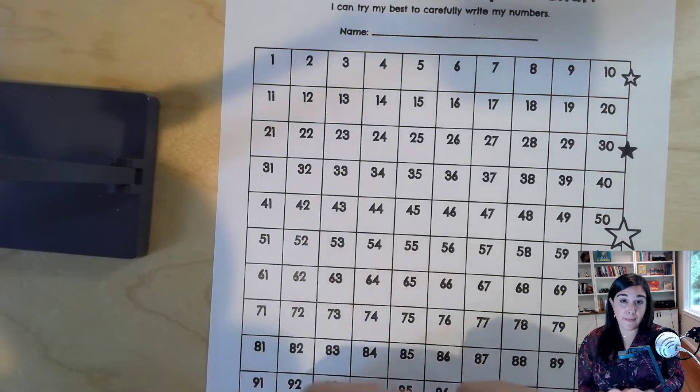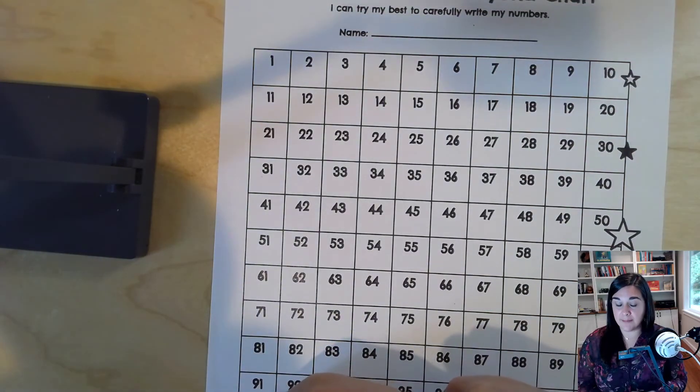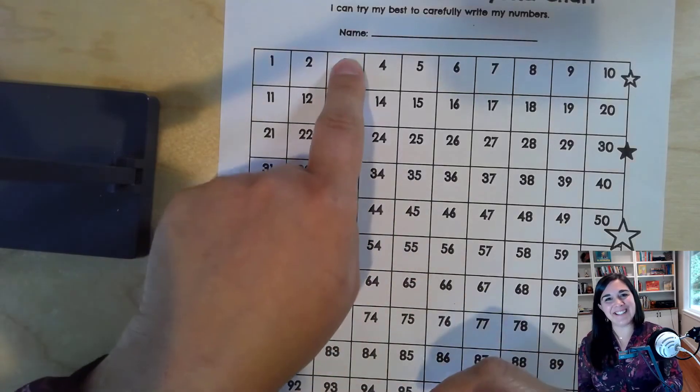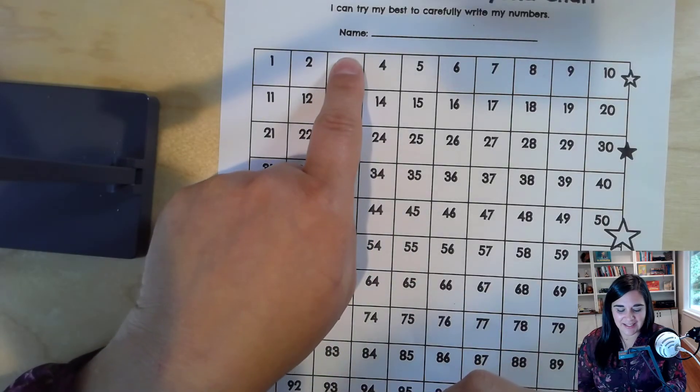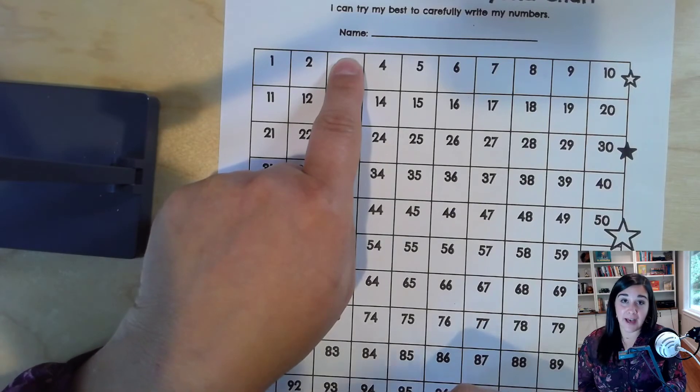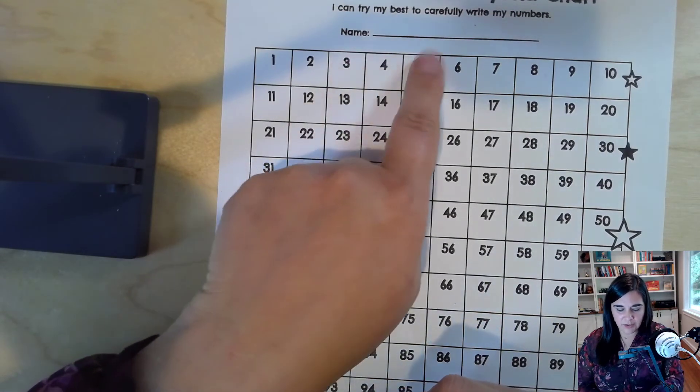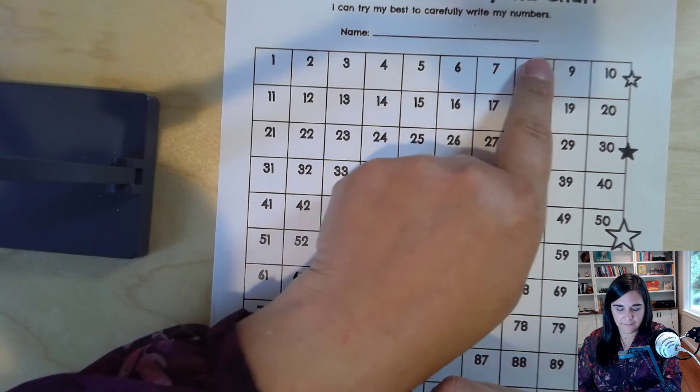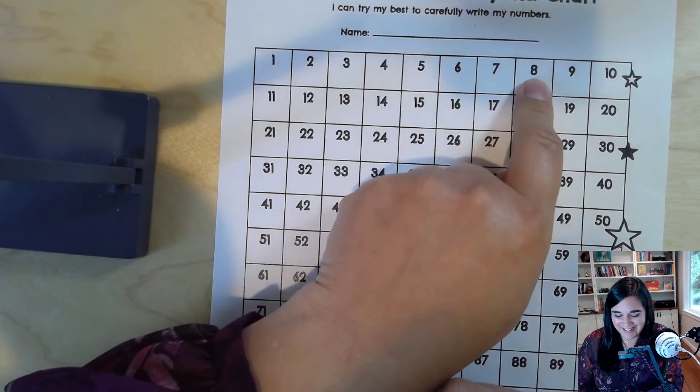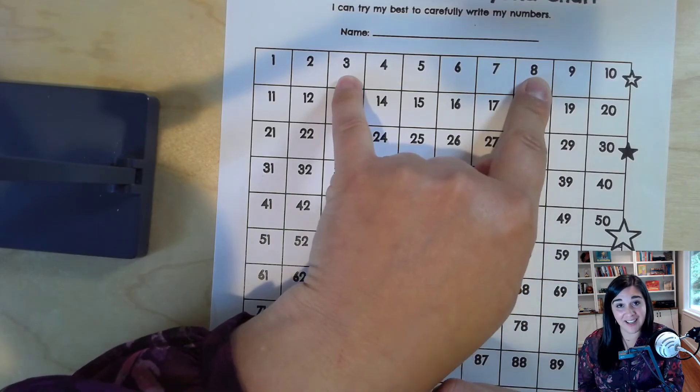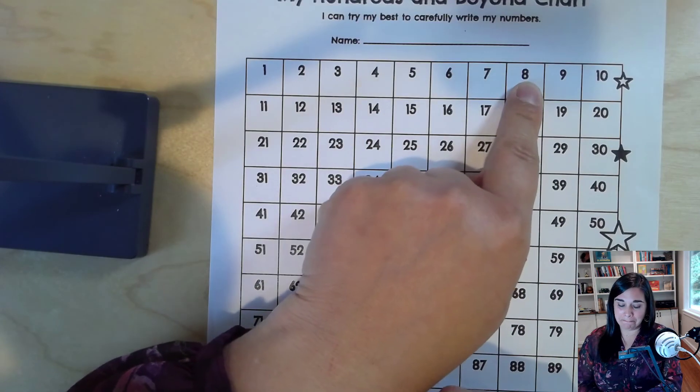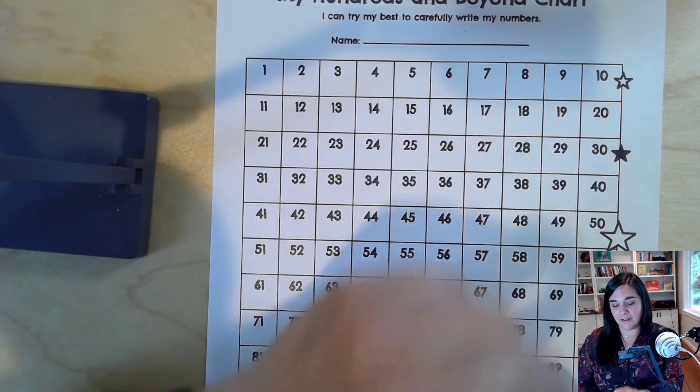Okay. I'm going to start on the number 3 this time. Can you find it before me? Put your finger on it. Nice work. Here's the number 3. Let's add 5 more. 1, 2, 3, 4, 5. Did you beat me? 5 more than 3 is 8.